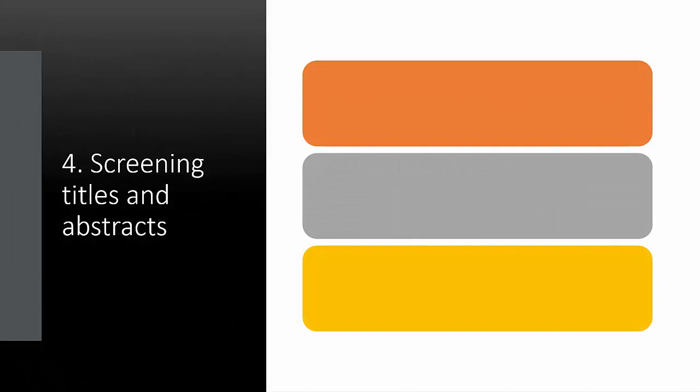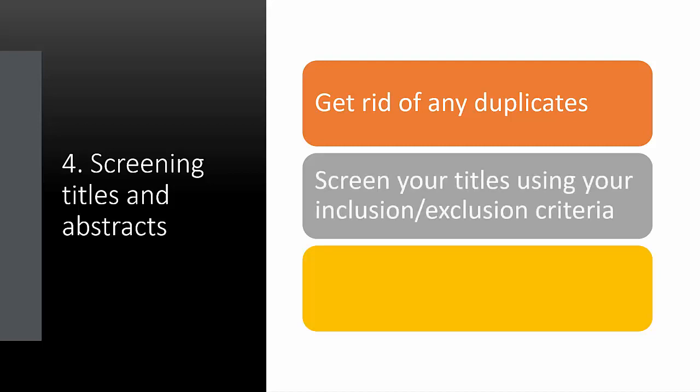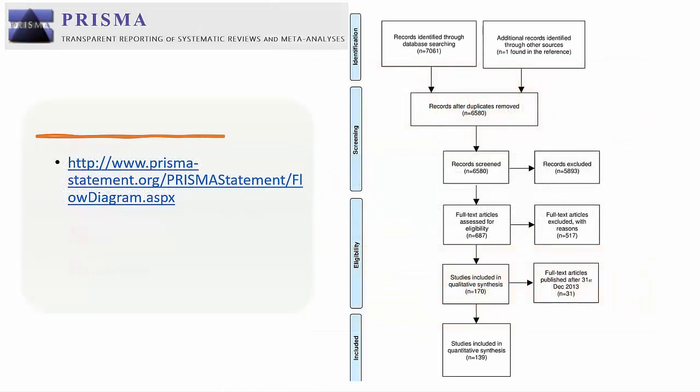Step four is where you are faced with a big long list of potential papers which you need to start whittling down. There is generally some overlap of journals across the various databases, so once you have your initial list of potentials — collected from the titles alone — you should then identify and remove any duplicates. After this, you must carefully screen each of your remaining papers using your inclusion and exclusion criteria.